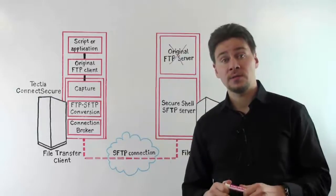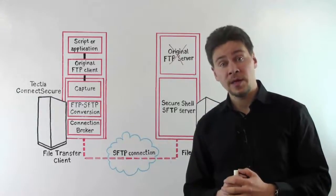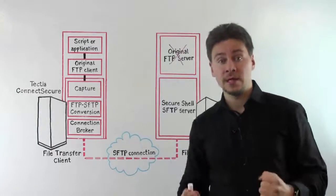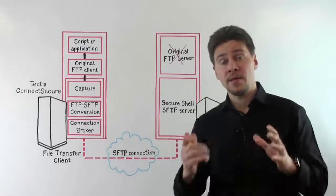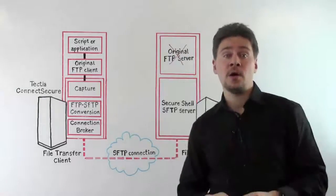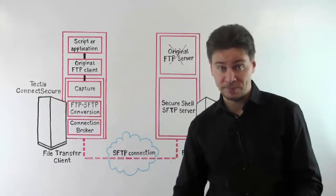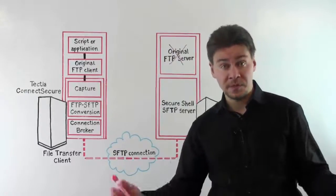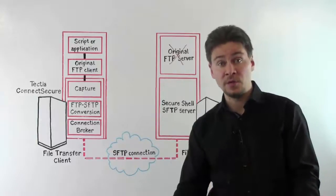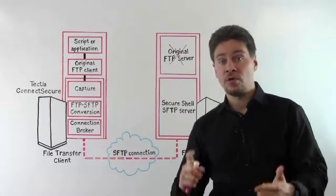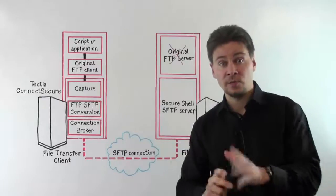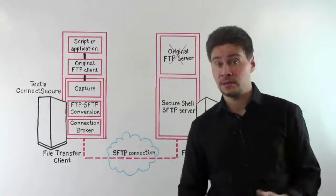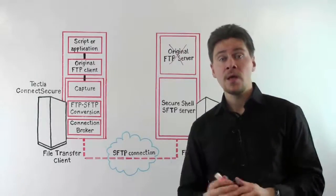Connect Secure was capturing the outgoing business application traffic and pushing it through a secure SSH tunnel — that was the method by which the application traffic was encrypted. Connect Secure helps customers secure business application traffic even if the application uses multiple ports or connects to multiple different servers. There are plenty of configuration options available in Connect Secure.